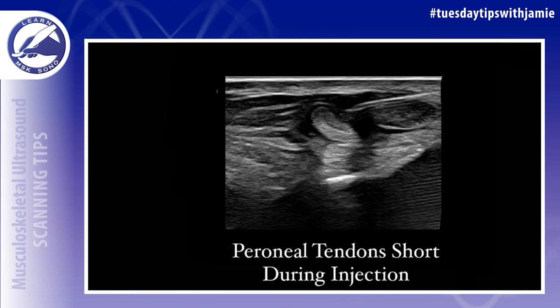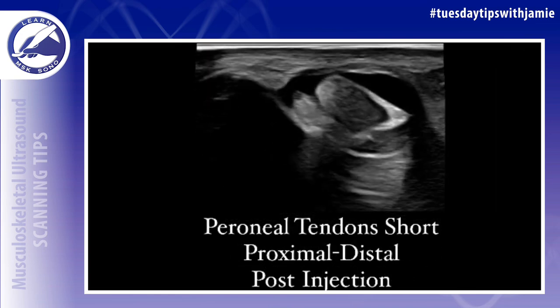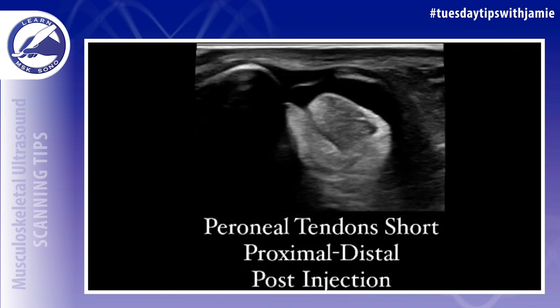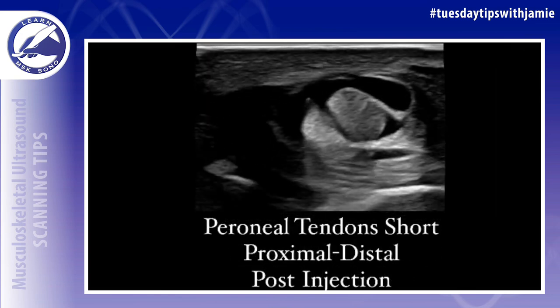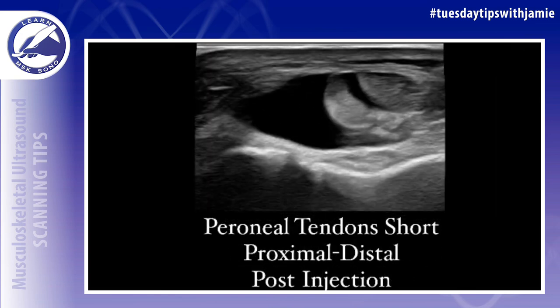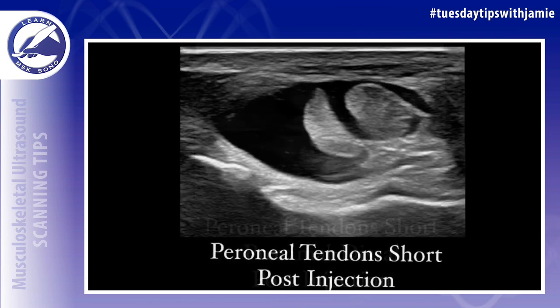For image storage and documentation purposes, you should store a post-injection cine clip while sweeping through the tendon in the short axis from proximal to distal. Ideally, the injectate will spread along the entire length of the tendon and will be seen surrounding the tendon along its course.